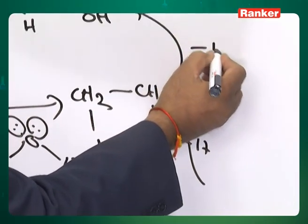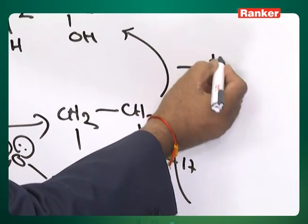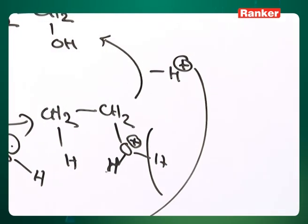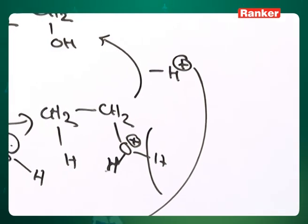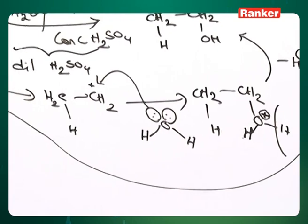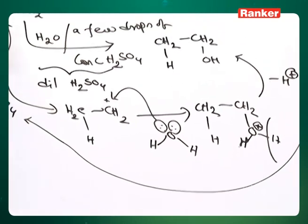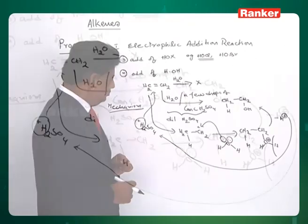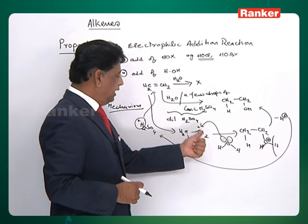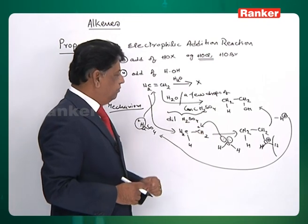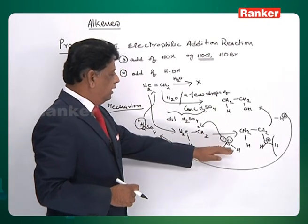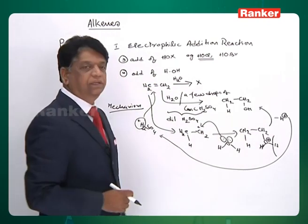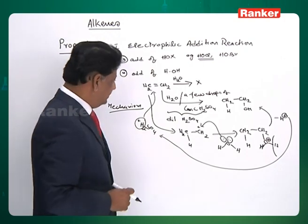From the oxonium ion, one H-plus is lost, giving ethanol. That H-plus goes back to the sulfuric acid. So: from sulfuric acid we take one proton; the whole water is added; from the water one proton is deleted and returned to the sulfuric acid. This confirms the mechanism passes through a carbocation.